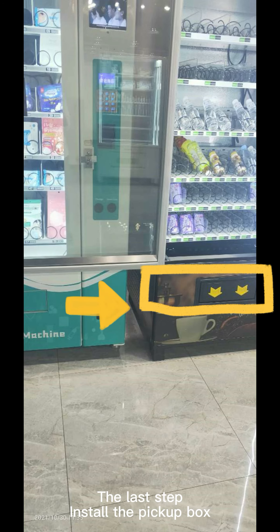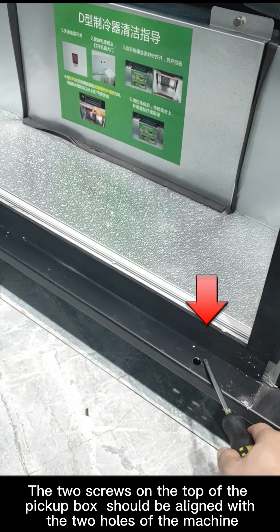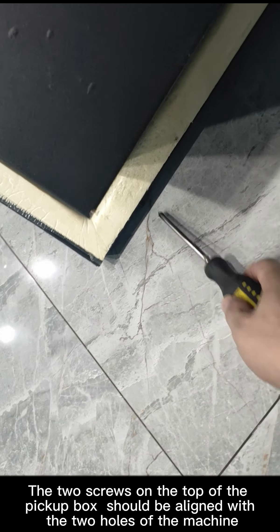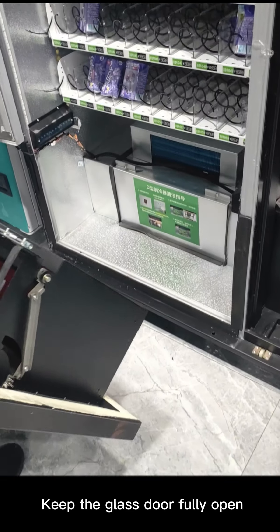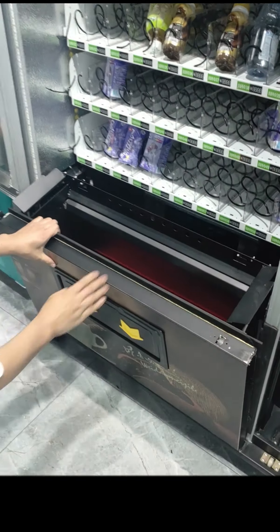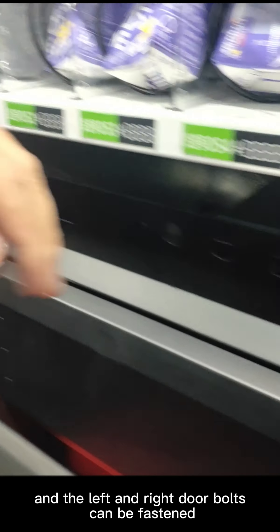The last step: install the pickup box. The two screws on the top of the pickup box should be aligned with the two holes of the machine. Keep the glass door fully open, then the fetching box can be fully pushed inward and the left and right door bolts can be fastened.